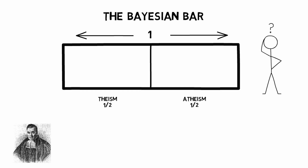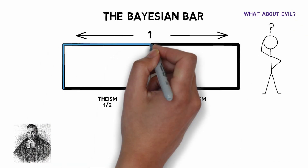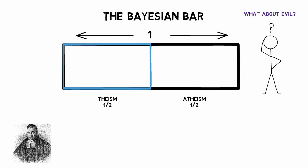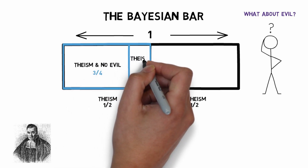Now imagine our agnostic has never considered any evidence for theism or atheism. Suppose he starts by thinking how likely the existence of God would be if there's evil in the world. He starts with the theistic half of the bar and asks himself: suppose God exists, how likely would it be that there is evil in the world? Maybe he thinks that because God is all-powerful, all-knowing, and wholly good, the existence of evil doesn't seem very likely at all. But perhaps he also thinks it's not impossible that God and evil exist together, and so he gives three-quarters of the theistic portion to theism and no evil, and a quarter of it to theism and evil.